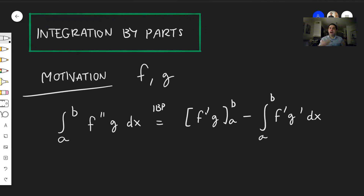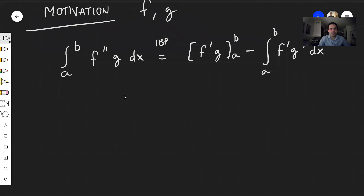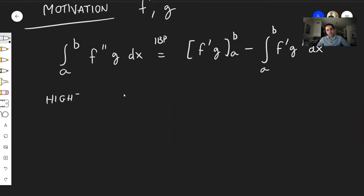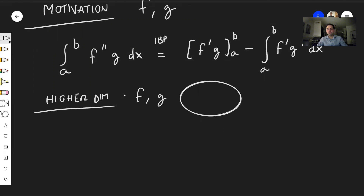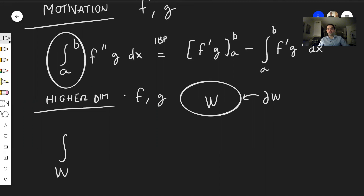In higher dimensions, the formula is almost exactly the same, except we need to define what f double prime, f prime, and f prime g prime mean. In higher dimensions, you still have two functions f and g, but now defined over a set w with boundary ∂w. The question is what does this formula become? The integral is now over w, g is still g, and the question is what becomes of f double prime — we want some scalar expressing second derivatives of f.